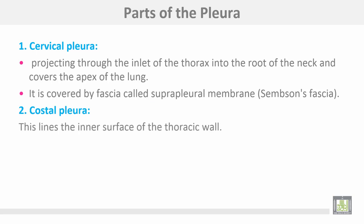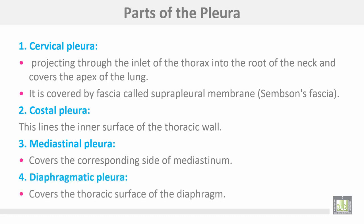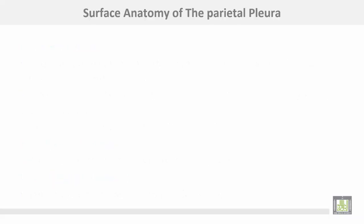Costal pleura lines the inner surface of the thoracic wall. Mediastinal pleura covers the corresponding side of the mediastinum. Diaphragmatic pleura covers the thoracic surface of the diaphragm.